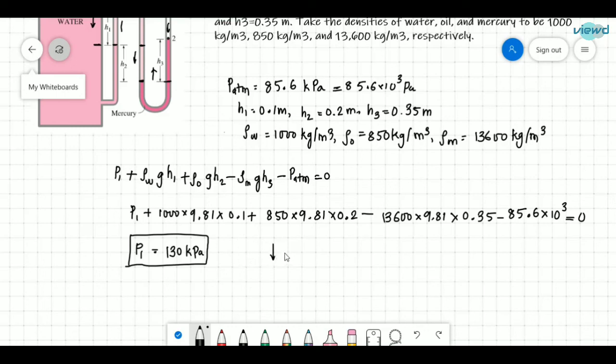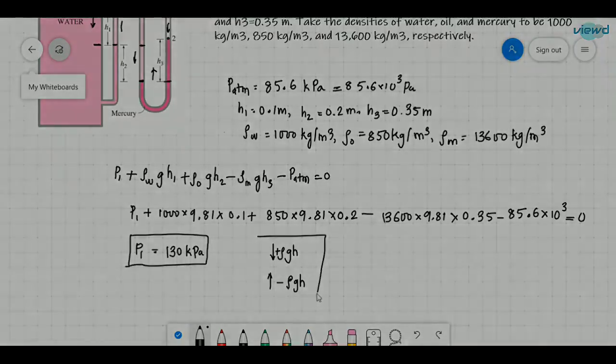So this is the simple way of doing these problems. If we go deep into it, add rho GH. If we go upside, then subtract rho GH. And that's it.